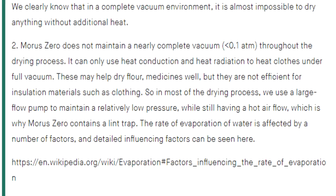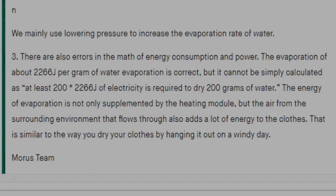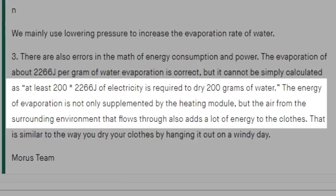So what have we got so far? A vacuum dryer that uses vacuum to help clothes dry faster. That doesn't actually maintain vacuum for the whole time, which uses infrared light. Sorry, did I say infrared light? Nope. It uses air from the surrounding environment. Oh, sorry, what's that you were saying? That it was ventless. No, actually, no, you can't be ventless if you're sucking air in from the environment. As they explicitly say, the energy of evaporation is not only supplemented by the heating module, but from air from the surrounding environment that flows through also adds a lot of energy to the clothes. And it's going to use high flow pumps and heaters. Yeah, congratulations, you've invented a tumble dryer.